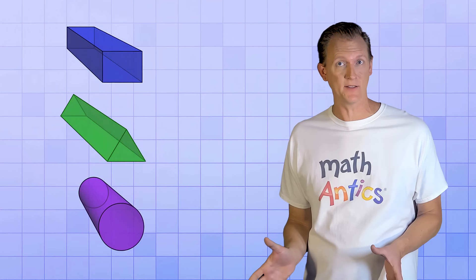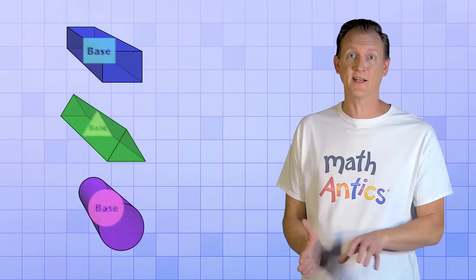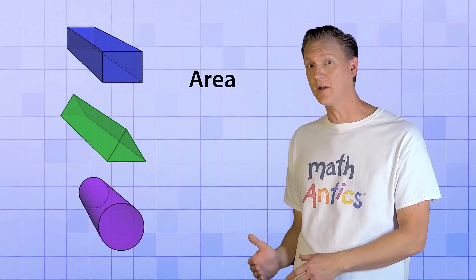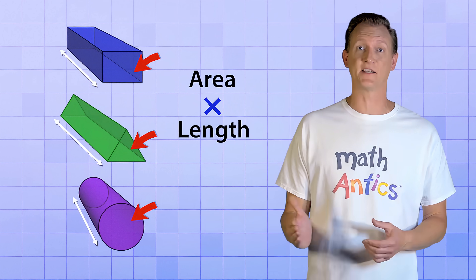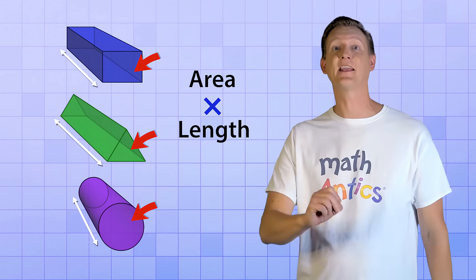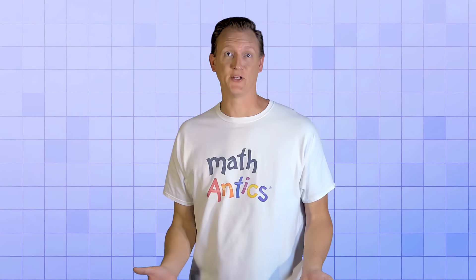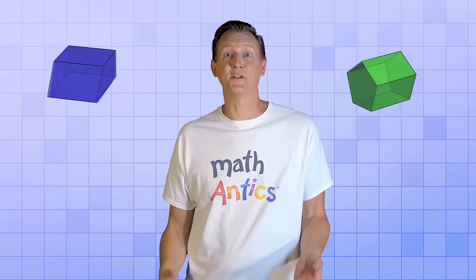To find the volume of 3D shapes made by taking a 2D shape and extending it along a third axis, you simply find the area of that shape and multiply it by the length it was extended — and that gives you the volume. This works for any 2D shape: trapezoids, pentagons, diamonds, stars, or hearts.